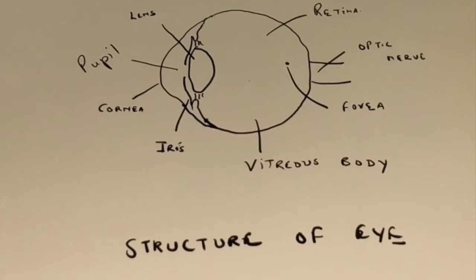This is how the structure of the eyeball looks. As you can see, it is shaped like a ball. The front portion is more curved and is called the cornea. This is the transparent part of the eye from where light enters the eye.